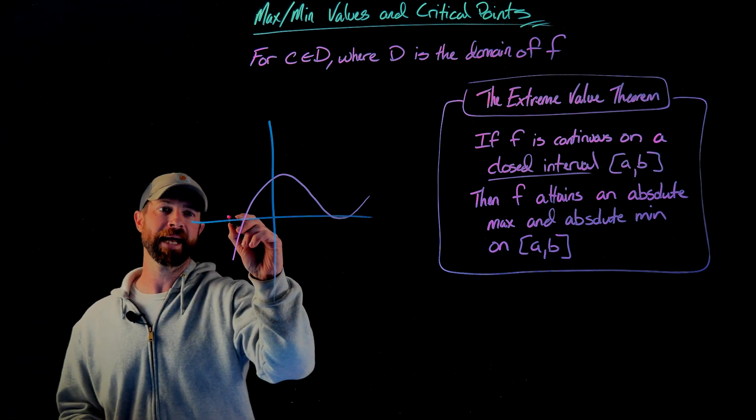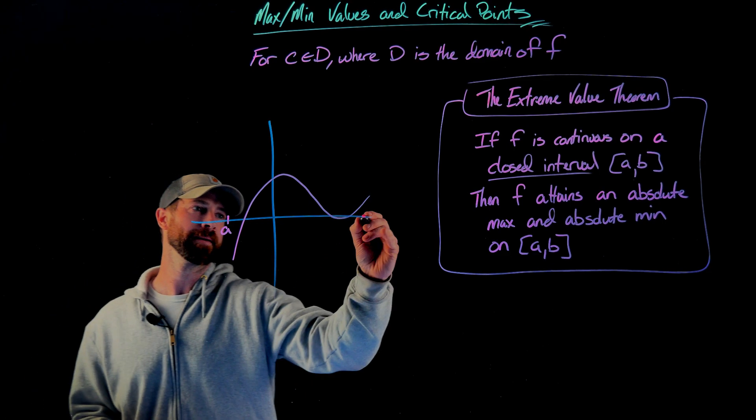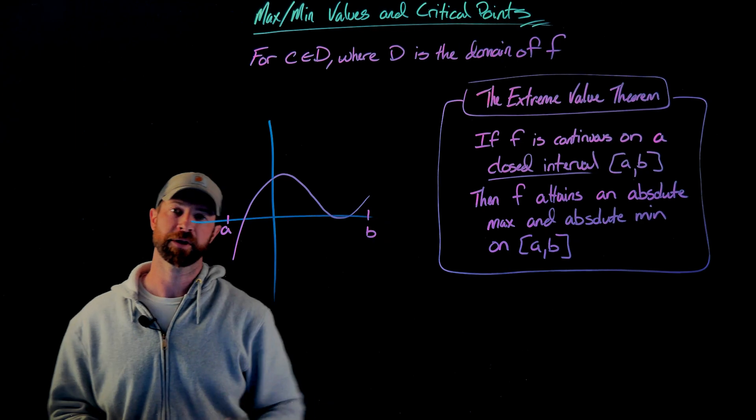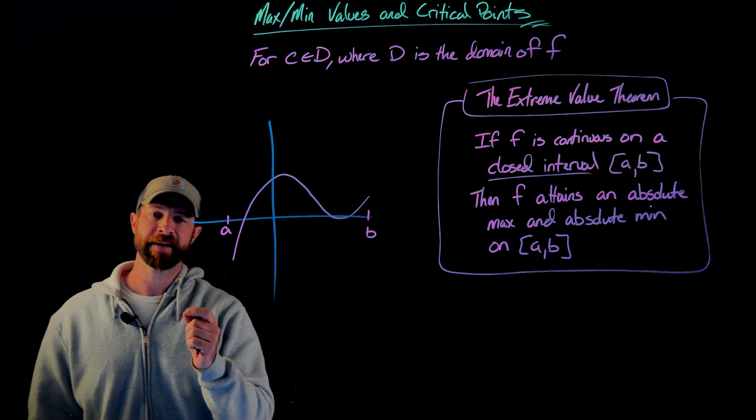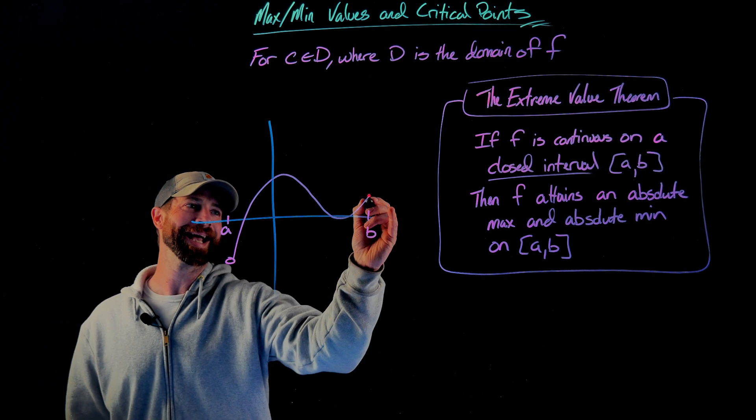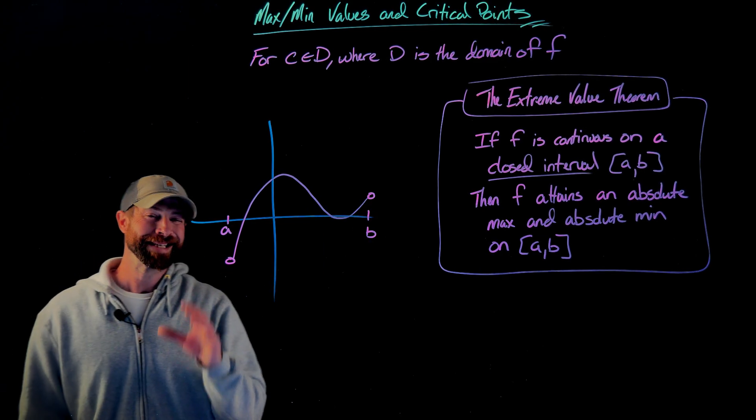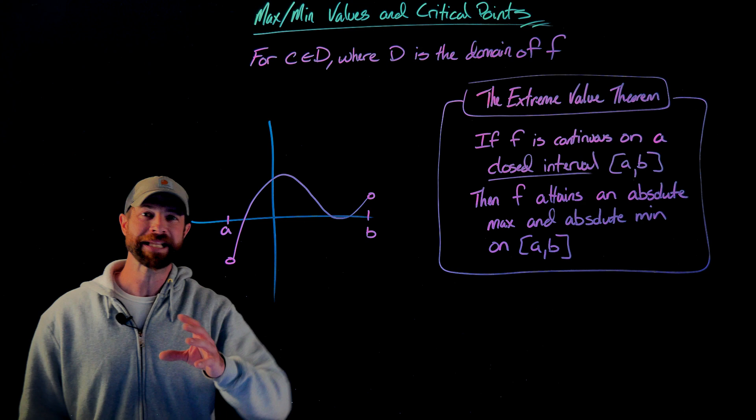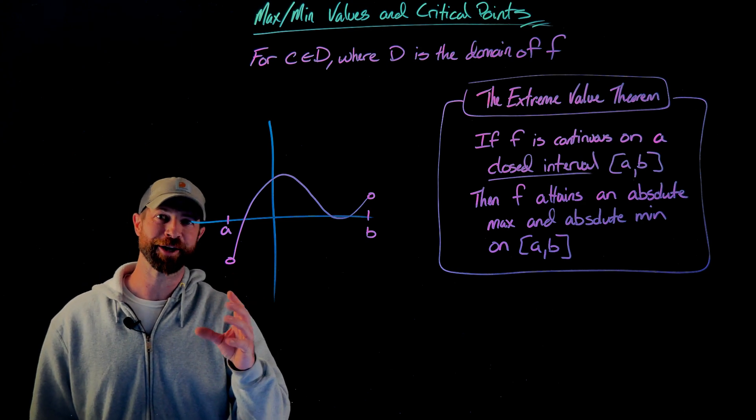Let's say we have a function that looks something like this. We'll define a to be this starting point right here and b to be this endpoint for this function. The extreme value theorem does not say anything if we don't go all the way to a and all the way to b. Here's the importance of a closed interval - this is a bit trippy and almost even hard to think about.